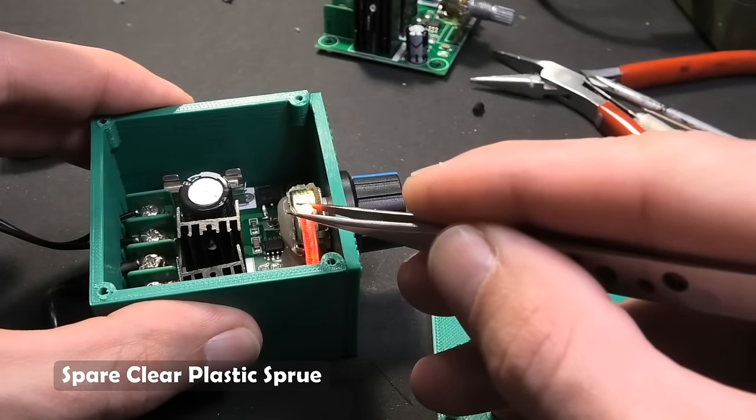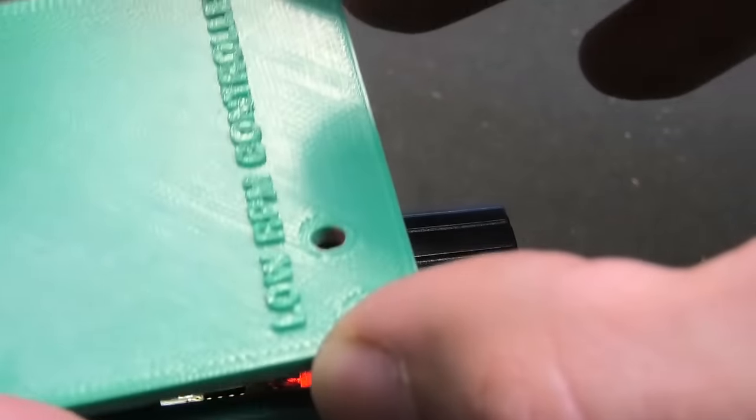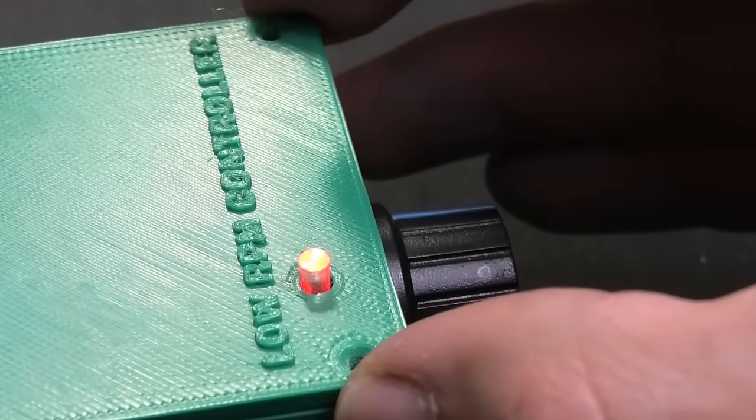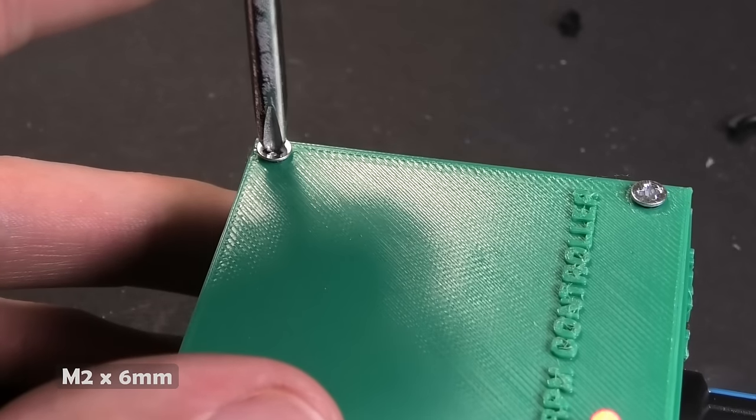The board has LED as a power indicator. You can use a spare clear plastic sprue and extend the light out of the box. Now it remains to cover the box with the screws, connect the drill and have fun with the plastic grinding or micro drilling.